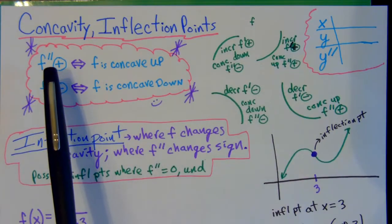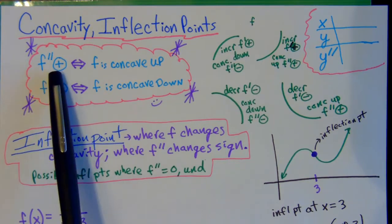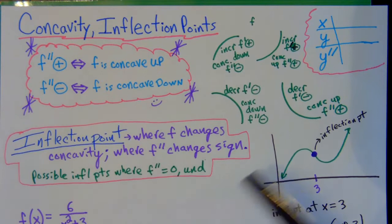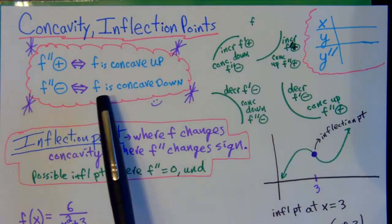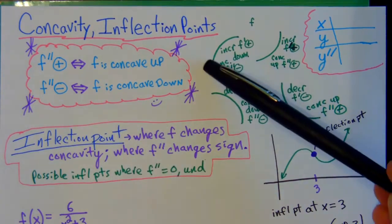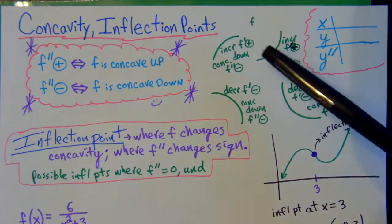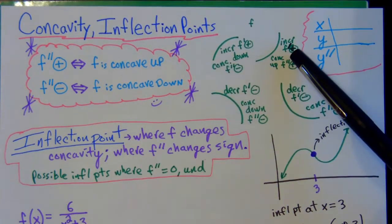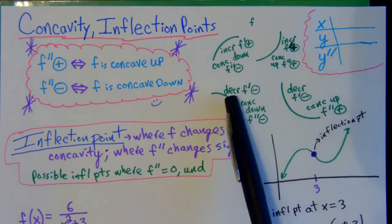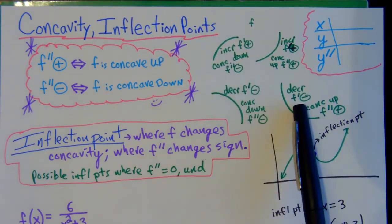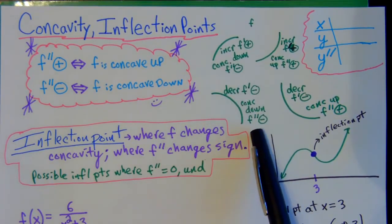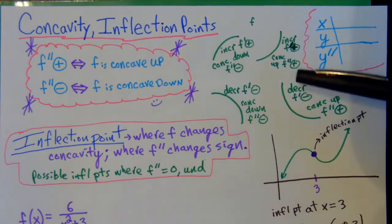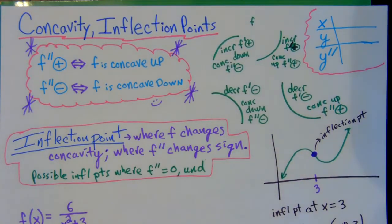Just like with the first derivative — positive means increasing, negative means decreasing — we now have a rule involving the second derivative. If the second derivative is positive, the original graph is concave up; it will hold the water. If the second derivative is negative, the graph is concave down; it will spill the water. These two graphs are increasing so the first derivative is positive; these two are decreasing so it's negative.